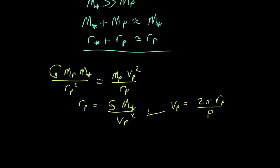So if we substitute that into here we end up with r planet equals G m star P squared all over 4 pi squared r planet squared.